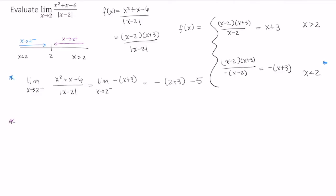Okay, so now let's look at the limit as x approaches 2 from the right. So we're coming, again, from values of x that are larger than 2. This equals the limit as x approaches 2 from the right of x plus 3.